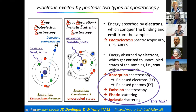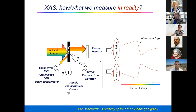Don't worry if RIXS sounds unfamiliar — we'll go through that. So let's take a look at the relatively easier case of X-ray absorption spectroscopy. The principle is to measure how much, or the percentage, of the X-ray photons get absorbed by your sample.